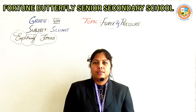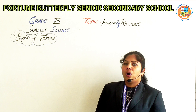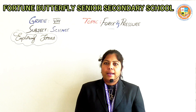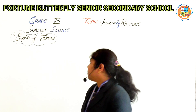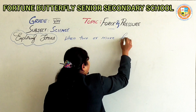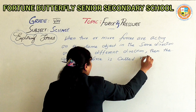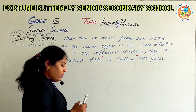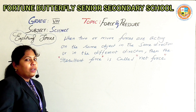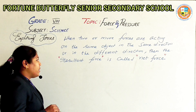If two or more forces are acting on an object in the same direction or in different directions, the resultant force is called the net force. Let us see how the direction will be in each case.